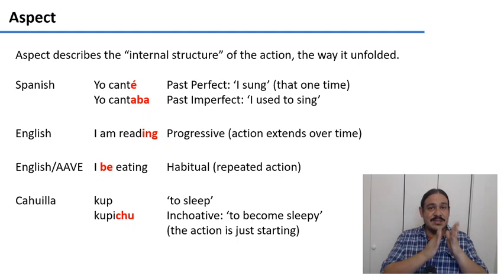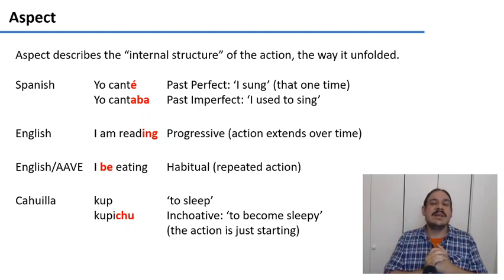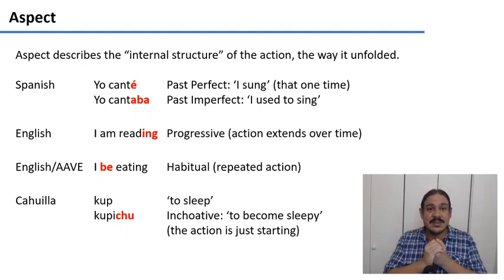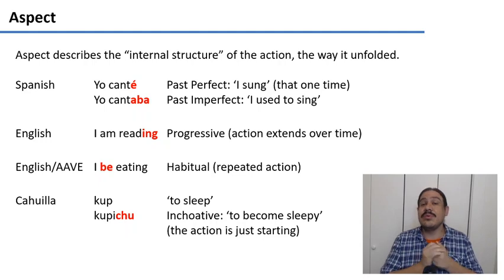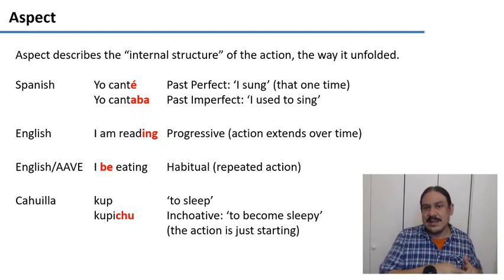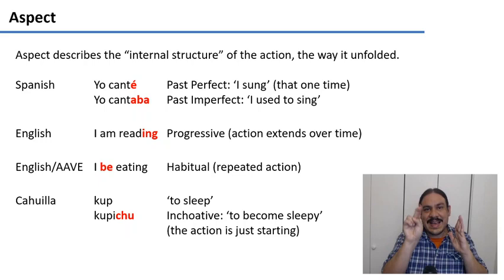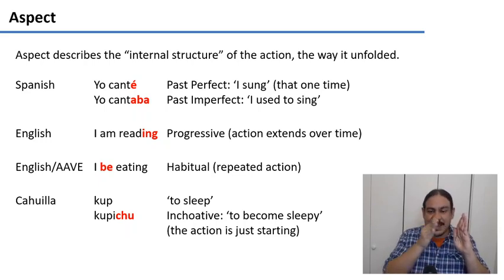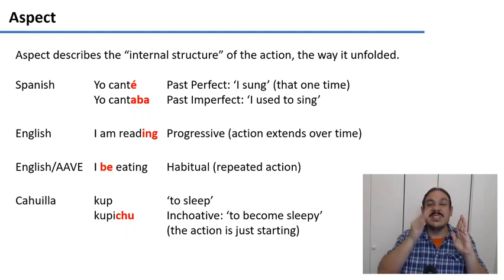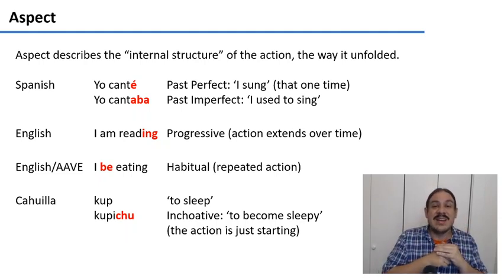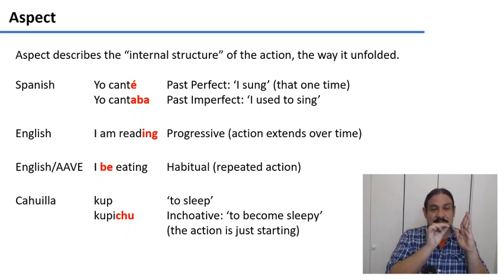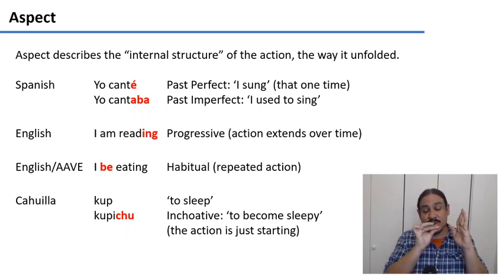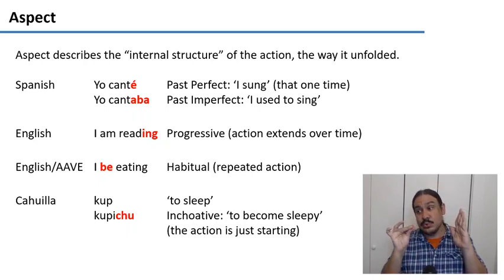Aspect is the internal temporal structure of the action — like how the action unfolded. For example, in Spanish, 'yo canté' and 'yo cantaba' are both in the past tense. However, the first one is in the perfect aspect — it tells you that I was singing and then I stopped, like I sung that one time. The second, 'yo cantaba,' is the imperfect, which means that something was continuing with no clear end point, like 'I used to sing.'